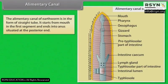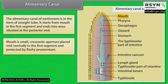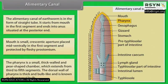Alimentary Canal: The alimentary canal of earthworms is a straight tube. It starts from the mouth in the first segment and ends at the anus at the posterior end. The mouth is a small crescentic aperture placed mid-ventrally in the first segment, protected by the fleshy prostomium. The pharynx is a small, thick-walled, pear-shaped chamber extending from the third to fifth segment. The dorsal wall of the pharynx is thick and bulb-like, known as the pharyngeal bulb.